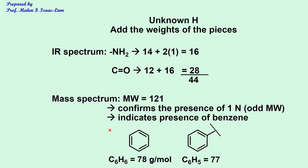The mass spectrum also indicates the presence of benzene. Benzene is C6H6, which is 78 g/mol. With six hydrogens around the ring, one H on each carbon, if you take out one H (monosubstituted), that gives C6H5, which is 78 minus 1 = 77. So that 77 peak corresponds to monosubstituted benzene.